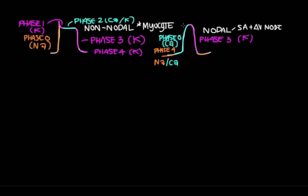These two action potentials not only look different — there's no phase 1 and phase 2 in the nodal action potential — but different ion channels are open during different phases.